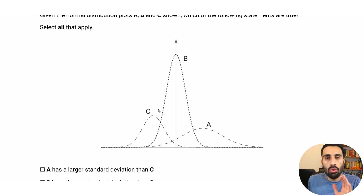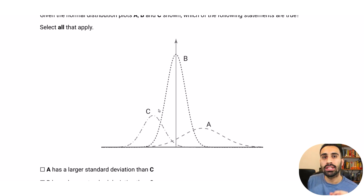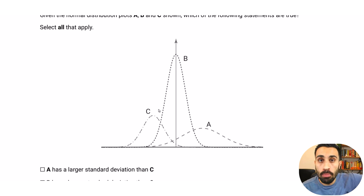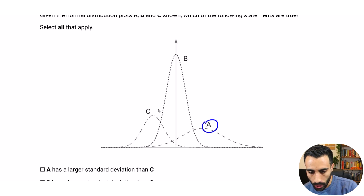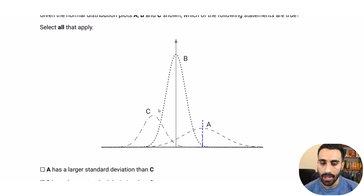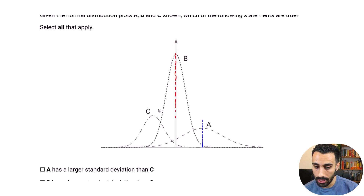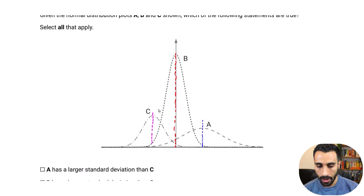When you see a normal distribution, note the axis of symmetry. There will always be an axis of symmetry — normal distribution is always symmetric. It always has the same mean, median, and mode. For A, the axis of symmetry is right at the center. For B, it's where the y-axis goes up. For C, it will be right at the middle as well.